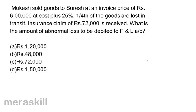Mukesh sold goods to Suresh at an invoice price of Rs. 6,00,000 at cost plus 25%. One-fourth of the goods are lost in transit. Insurance claim of Rs. 72,000 is received. What is the amount of abnormal loss to be debited to profit and loss account? A, Rs. 1,20,000; B, 48,000; C, 72,000; and D, 1,50,000.